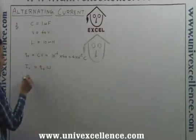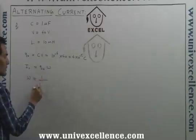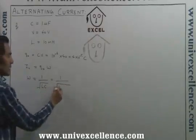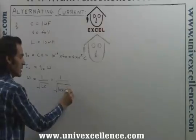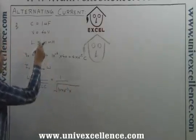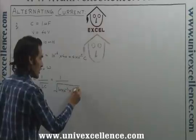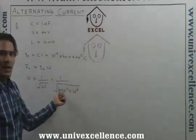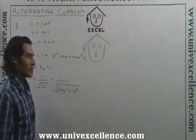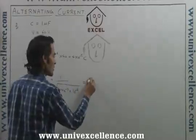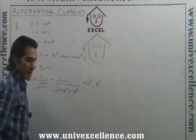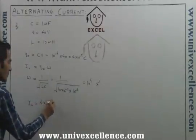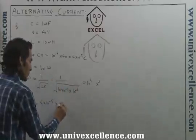I_naught equals q_naught times omega, and omega equals 1 over root(LC), where L is 10 millihenry (10 × 10^-3) and C is 10^-6. This gives root(10^-8), which comes out to 10^4 per second. So I_naught equals 4 × 10^-5 coulombs times 10^4, which equals 0.4 ampere.